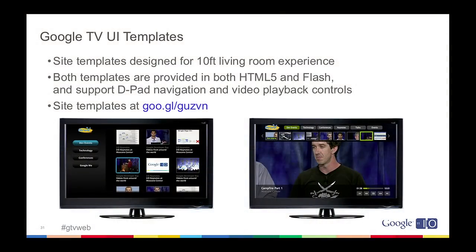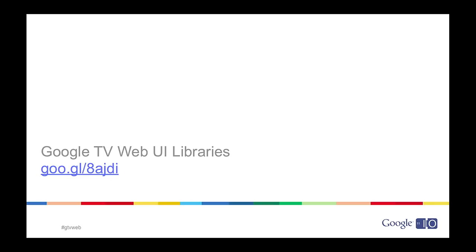Now we've talked about general sets of guidance and practical and technical constraints. We want to talk about the tools we have to help people build TV-optimized experiences. The first one is if you want to build a video content site - if you have a pool of video content and want to get it up and optimized for TV - we have a set of TV UI templates. These are implemented in both HTML and Flash, and there are two different templates showing different views of how you might want to present your content. Both support directional pad navigation and video playback controls. These site templates are up on CodeSite. But this is really only if you want to build a top-down design - you can rebrand this and change the styling, and functionally it'll still work the same way.